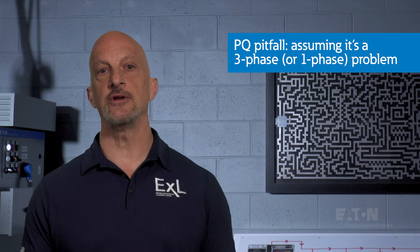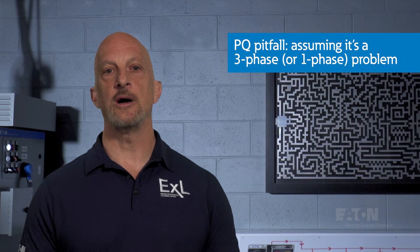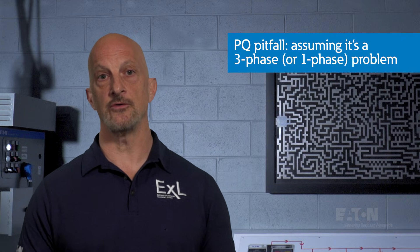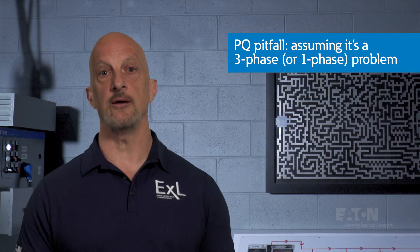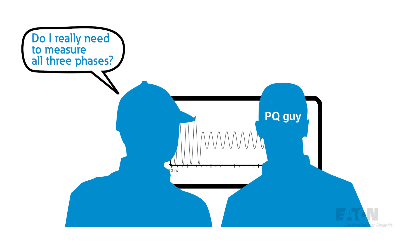Is it a three-phase or single-phase problem? Control power for three-phase motor contactors, starters, drives, and other power electronics is usually single-phase fed from a control power transformer. If a single-phase voltage sag occurs on the phase with the control power connected, the unit may drop out. However, if it occurs on another phase, the unit may keep operating. This is often very confusing for troubleshooters and leads to random conclusions.